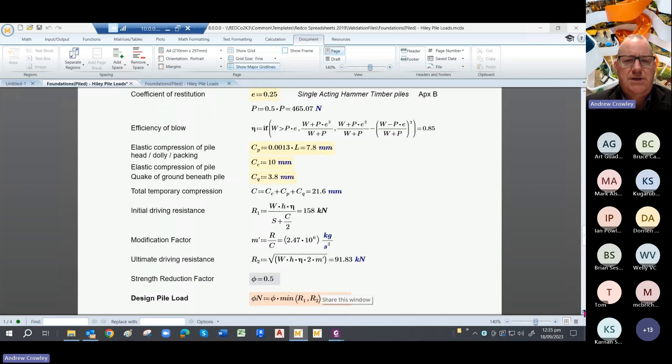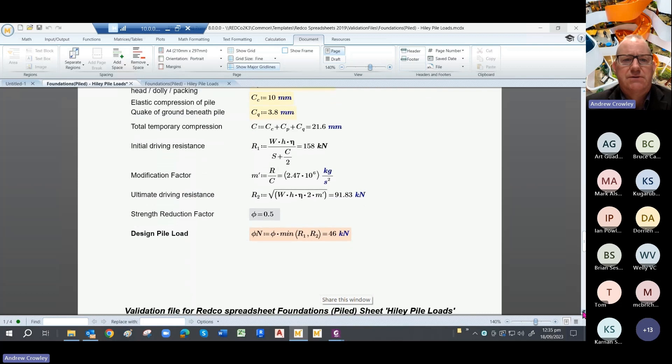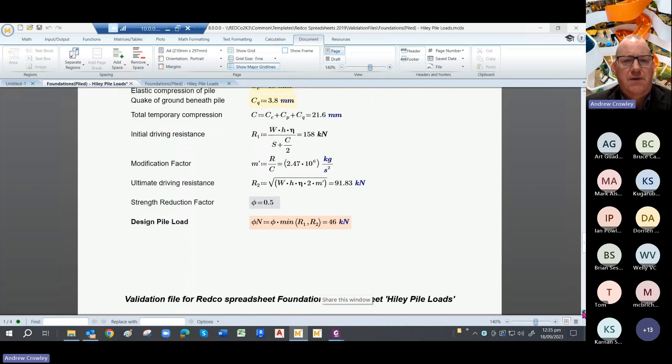So again we calculate the efficiency of the blow. The CP, CC, and CQ values all change because you're looking at very hard driving in there because the stress is so much higher there.